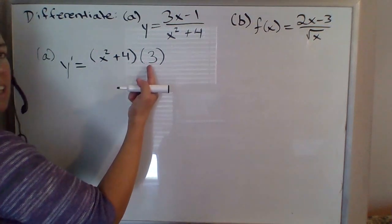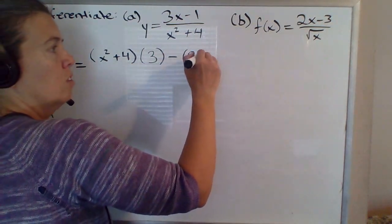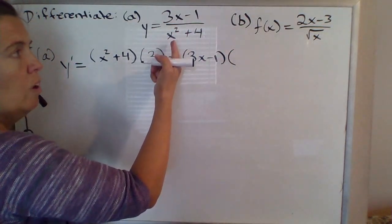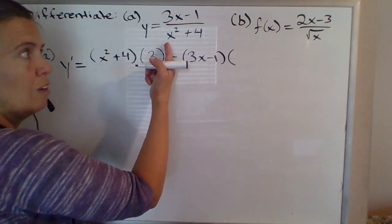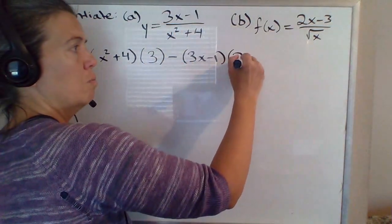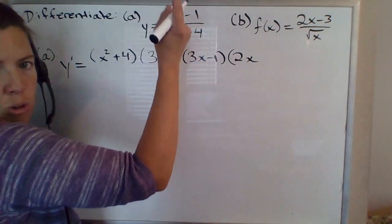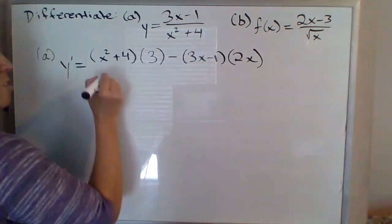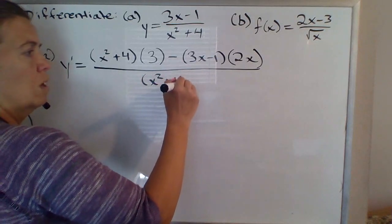This is the bottom function times the derivative of the top, minus the top function times the derivative of the bottom. So I just copy the numerator times the derivative of the denominator, which would be derivative of x squared. The 2 comes down — that's 2x to the first using the power rule — plus derivative of a number is just 0. All of that over the bottom function squared.